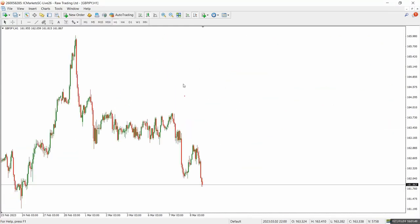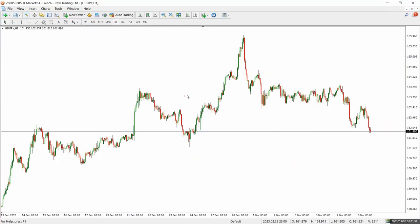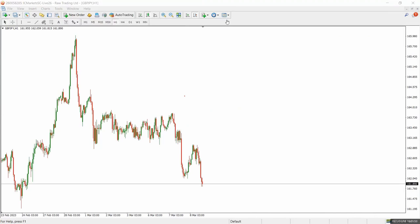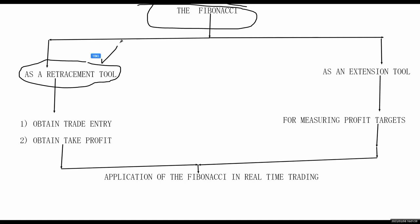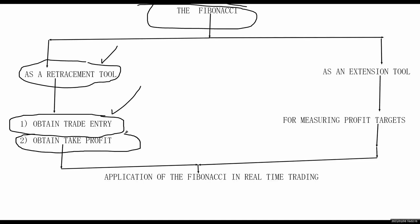Now let's look at the second thing. We've actually covered and exemplified using the Fibonacci as a retracement tool to find trade entry. Now, how can we use it to find take profit? So let's go back to the chart.